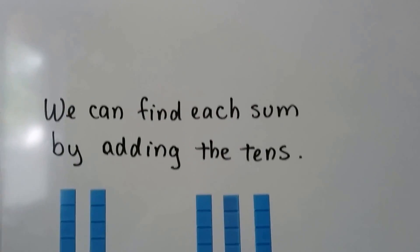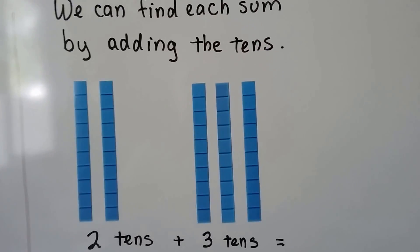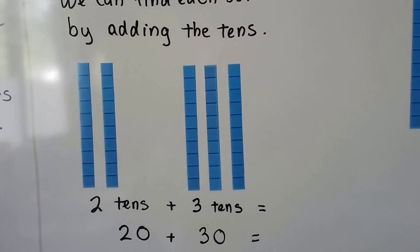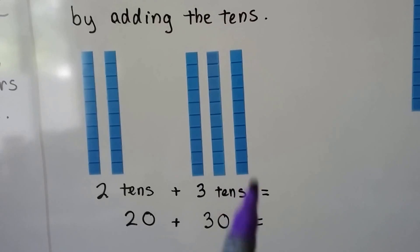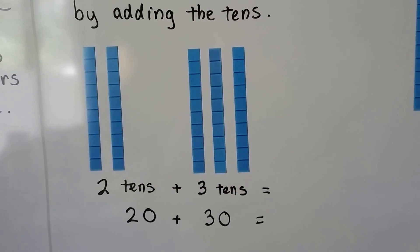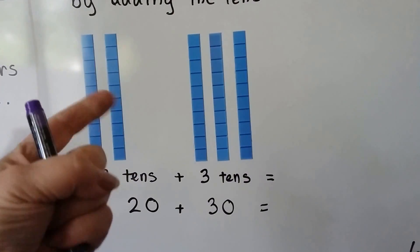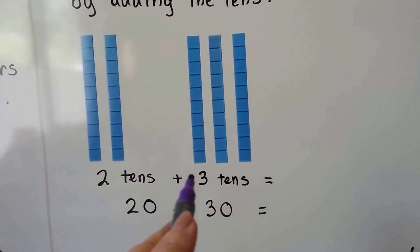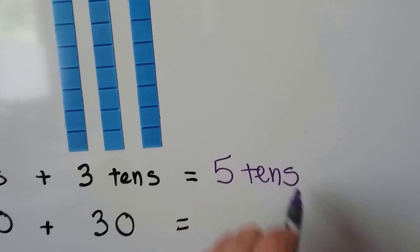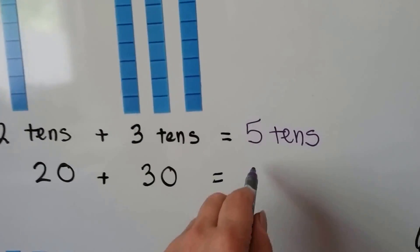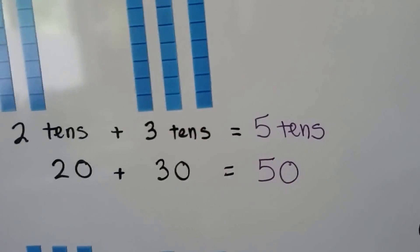We can find each sum by adding the tens. There's two tens and three tens. Two tens plus three tens, and that's the same thing as twenty plus thirty. Ten, twenty, ten, twenty, thirty. See? We think two plus three, and two plus three is five. Two, three, four, five. Two tens plus three tens would be five tens. Twenty plus thirty would be fifty. We write the five and put the zero for the ones place.